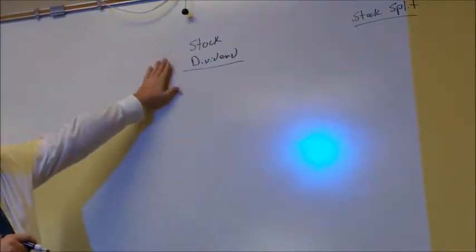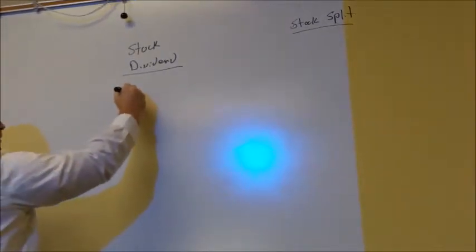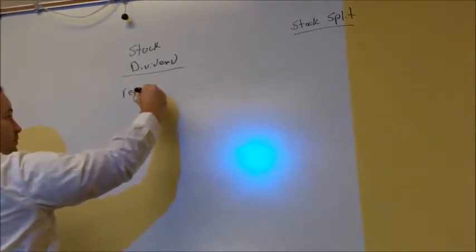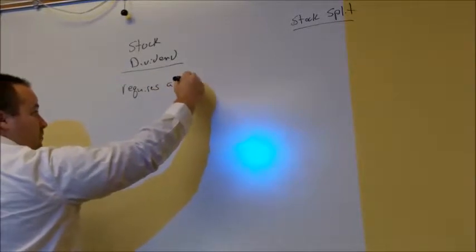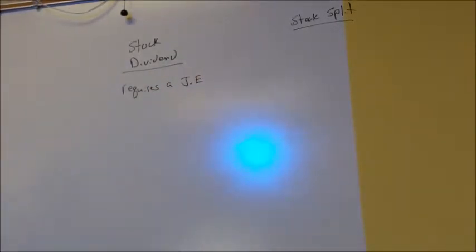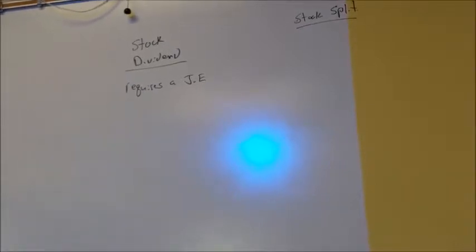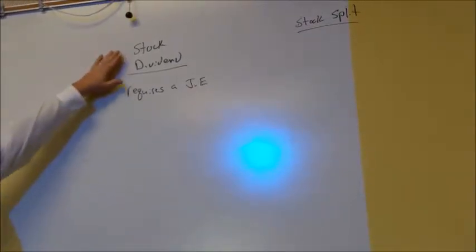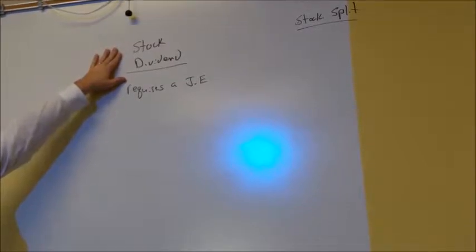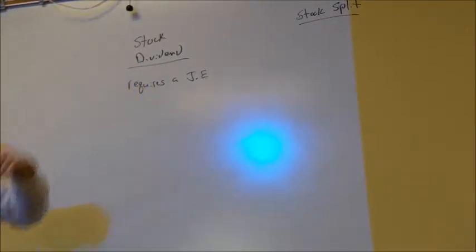First thing to know, if you have a stock dividend, this requires a journal entry. You're actually giving out ownership of the business. Instead of giving cash, most time when you give out a dividend, you debit your dividend, credit cash. In this case, if a company doesn't have a lot of cash, they'll give out more shares of stock.